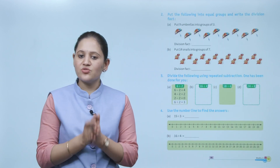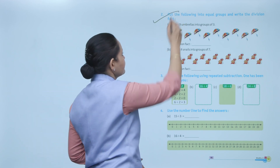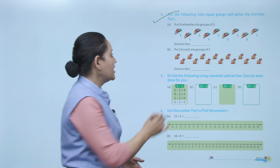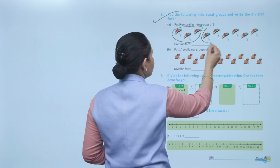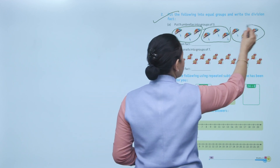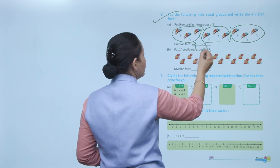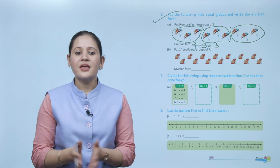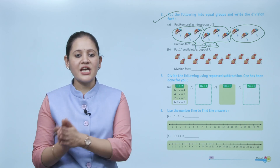Put the following into equal groups and write the division fact: put 9 umbrellas into groups of 3. We make 3 groups of 3, so the division fact is 9 divided by 3 equals 3.